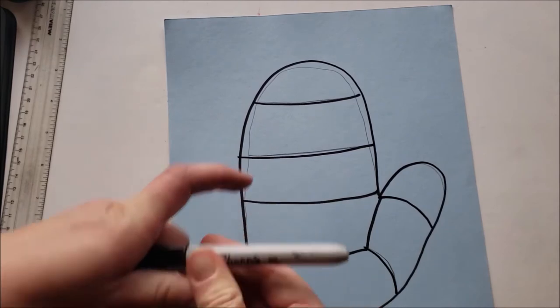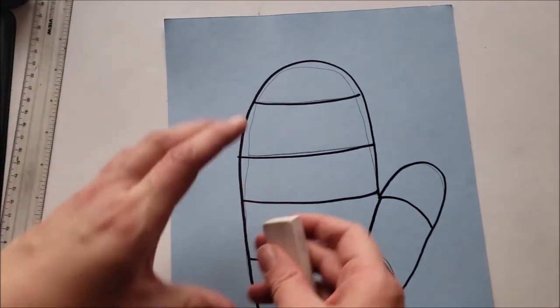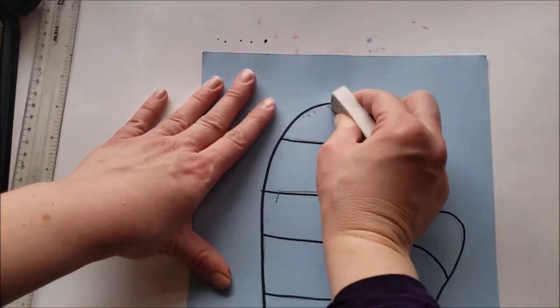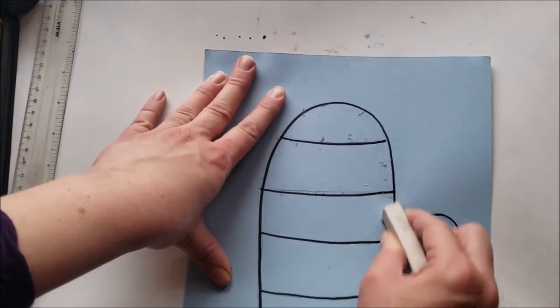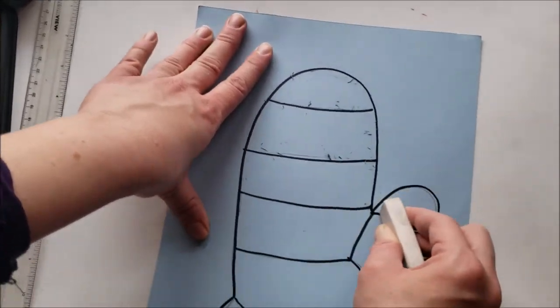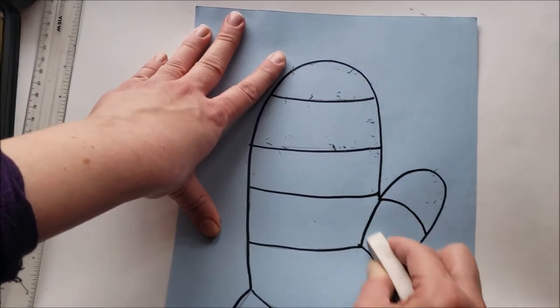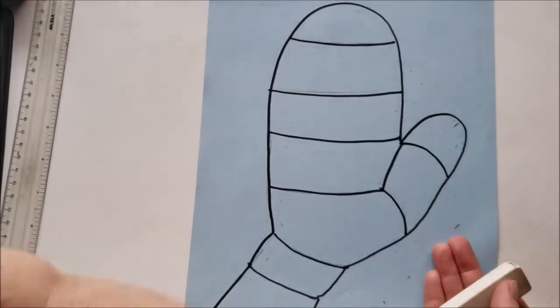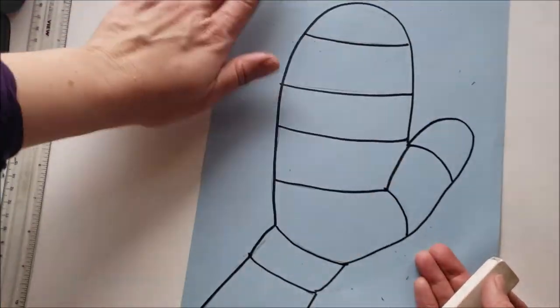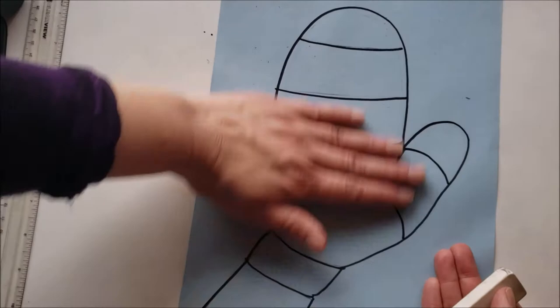So the pencil is erasable, which is actually what I'm going to do right now is erase my extra pencil lines because I don't want any of that extra stuff showing. So again, if you have a colored paper like me, that is great. If you don't, this is totally fine to do on white paper too. In fact, it'll probably look even more bright and colorful because you won't have a colored background.